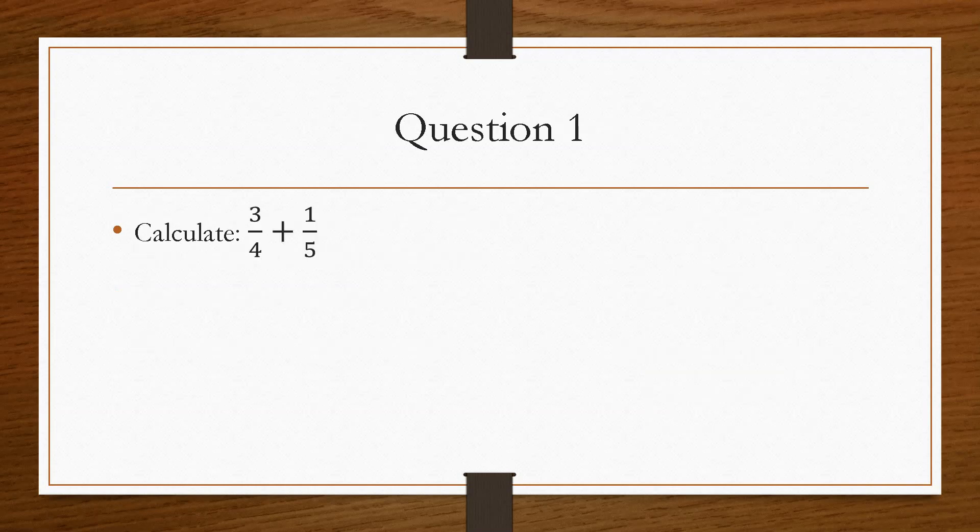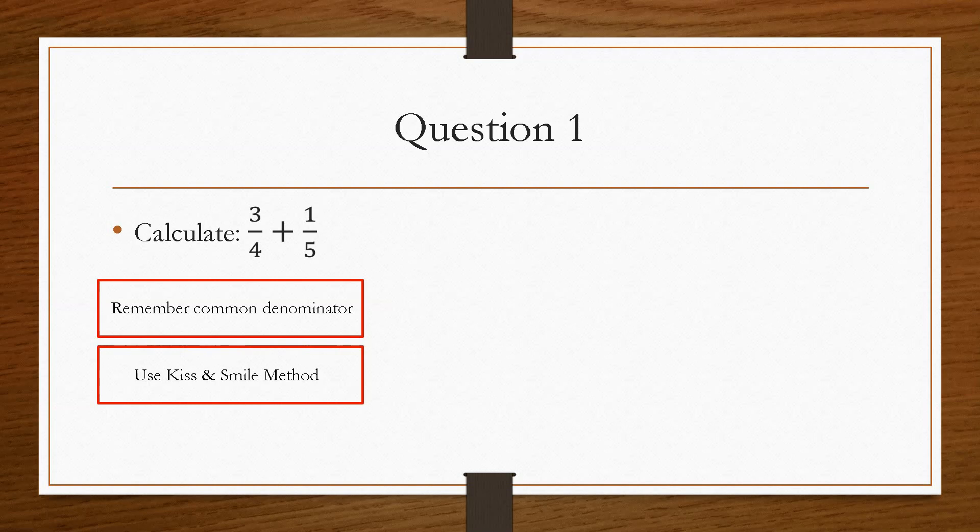So we take a look at question number one. Question number one asks us to calculate 3 over 4 plus a fifth. Now, from the rules before, remember that we need a common denominator on the bottom. Now, in order to do this, you can use a method called Kiss and Smile.